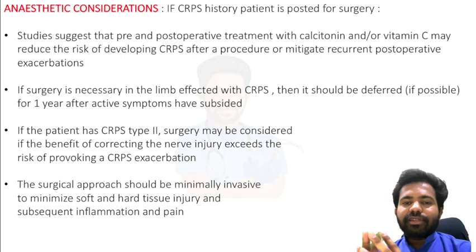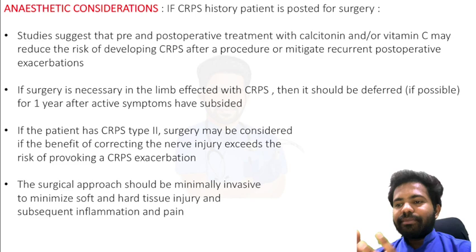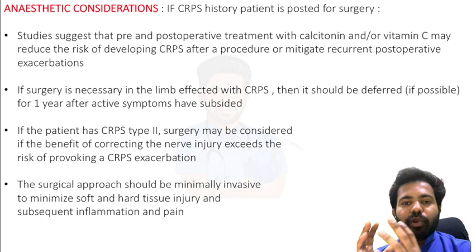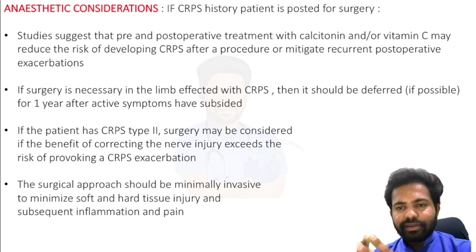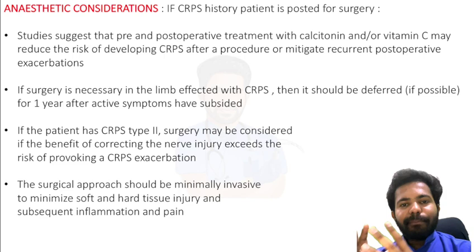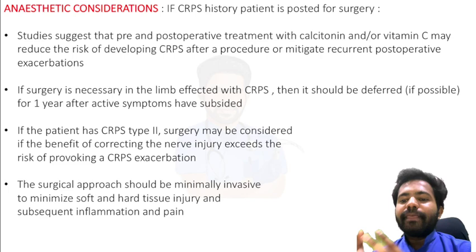If the patient has CRPS type 2, surgery may be considered if the benefit of correcting the nerve injury exceeds the risk of provoking a CRPS exacerbation — since correcting the direct peripheral nerve injury is beneficial. The surgical approach should always be minimally invasive to minimize soft tissue and hard tissue injury and subsequent inflammation and pain.